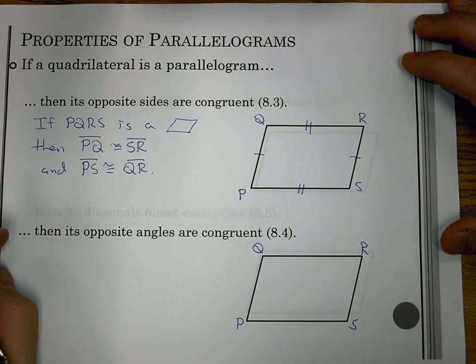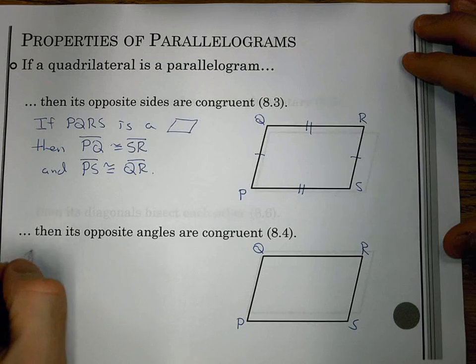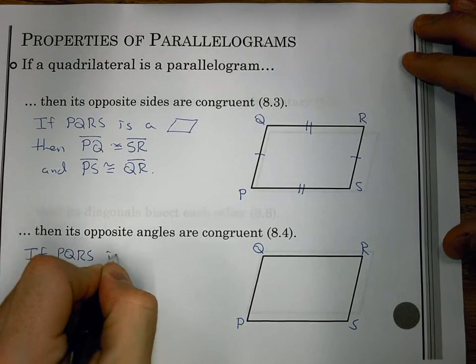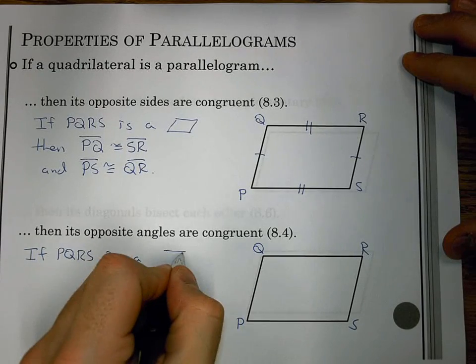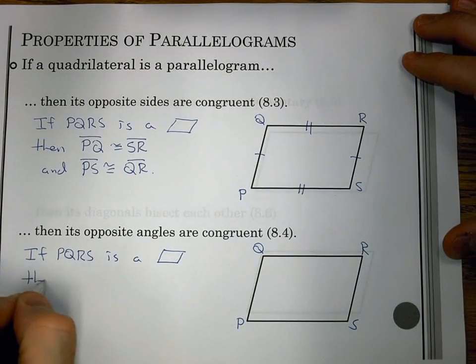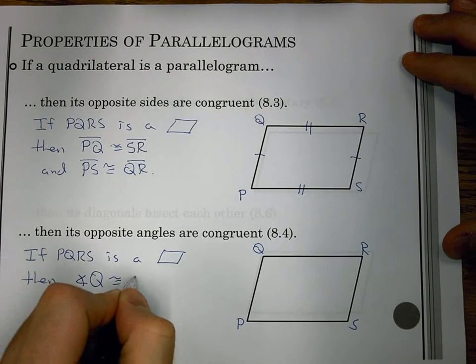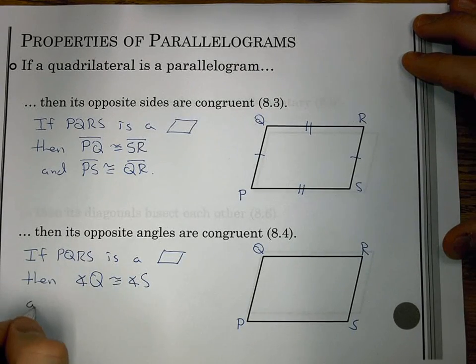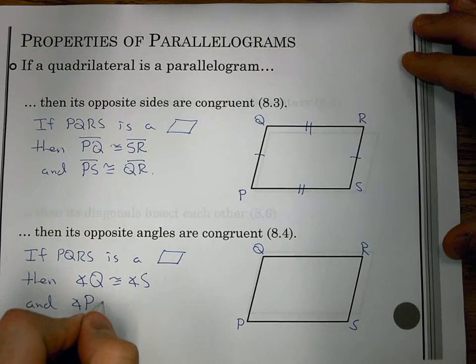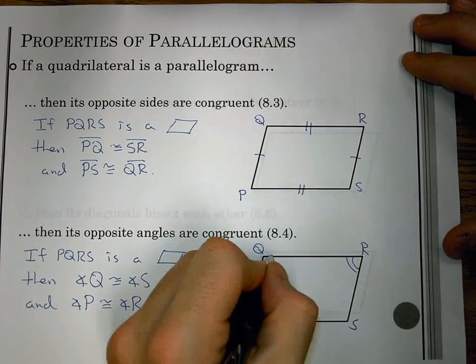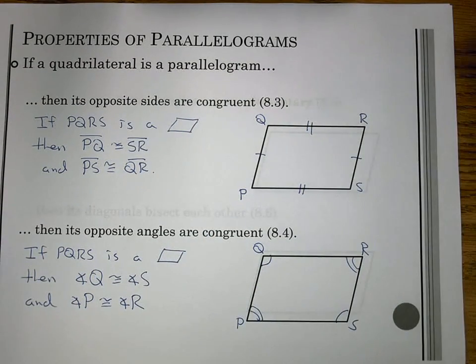Next one, 8.4, is if a quadrilateral is a parallelogram, then its opposite angles are congruent. So if PQRS is a parallelogram, then we're going to name the angles. Angle Q is opposite angle S, and angle P is opposite angle R. So those are congruent.